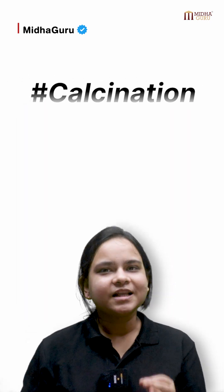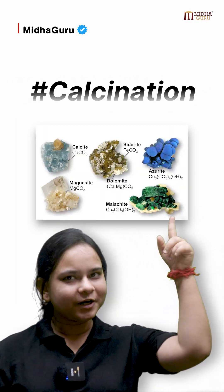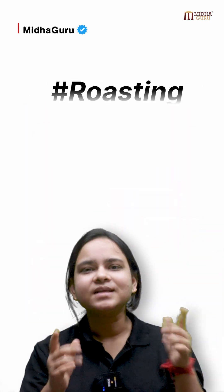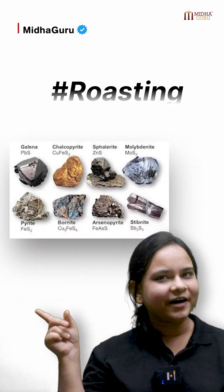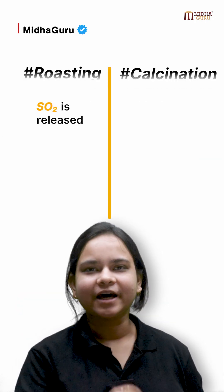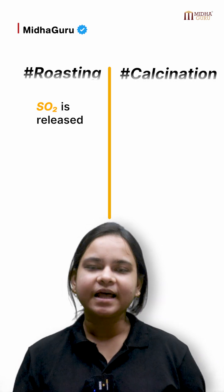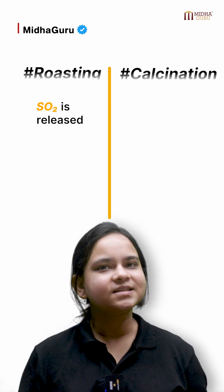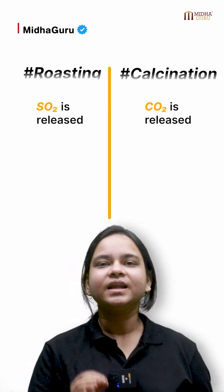Calcination is basically done for carbonate ores whereas roasting is done for sulphide ores. In case of roasting, gases like sulphur dioxide are released, whereas in calcination gases like carbon dioxide are released.